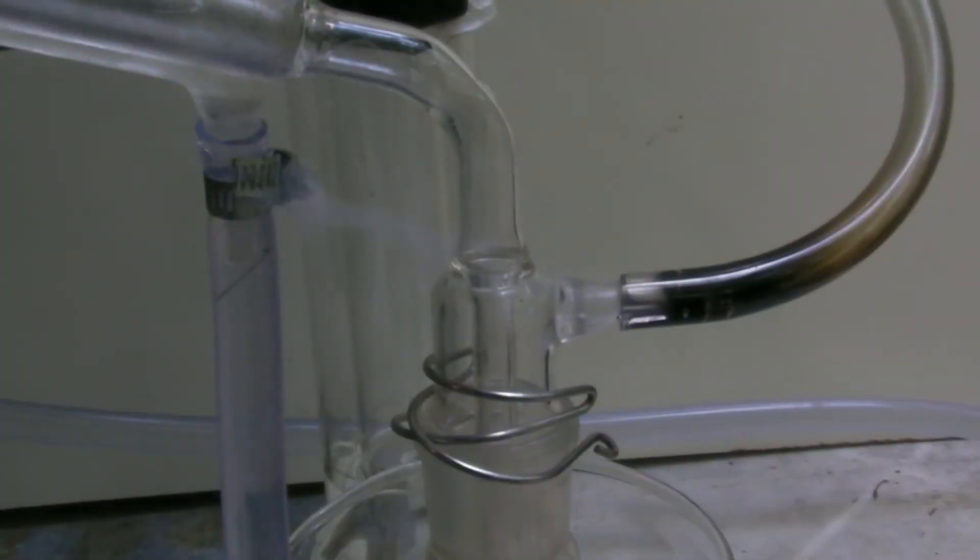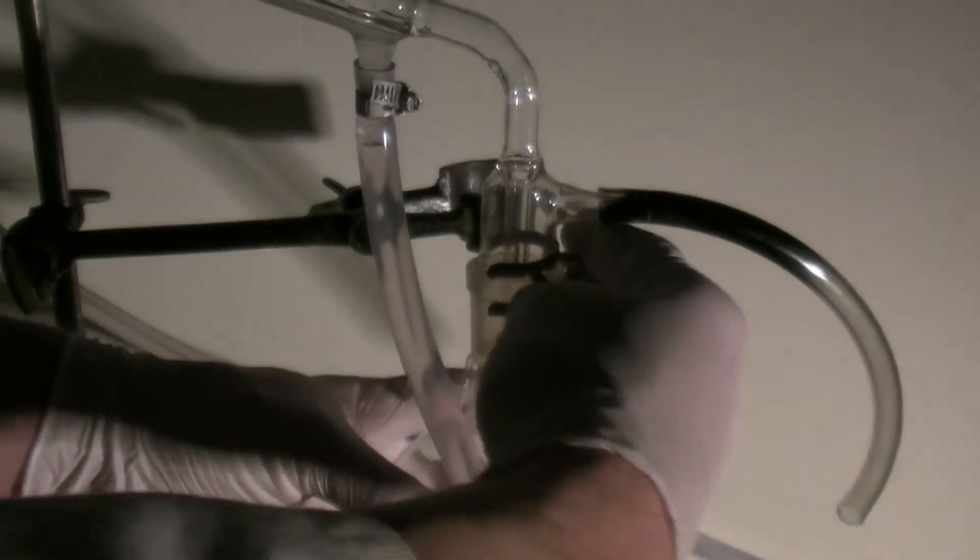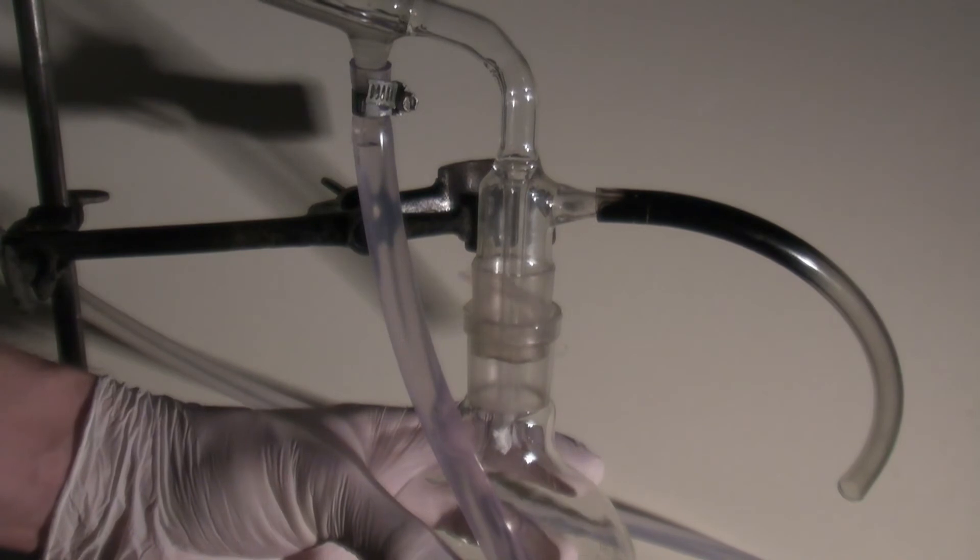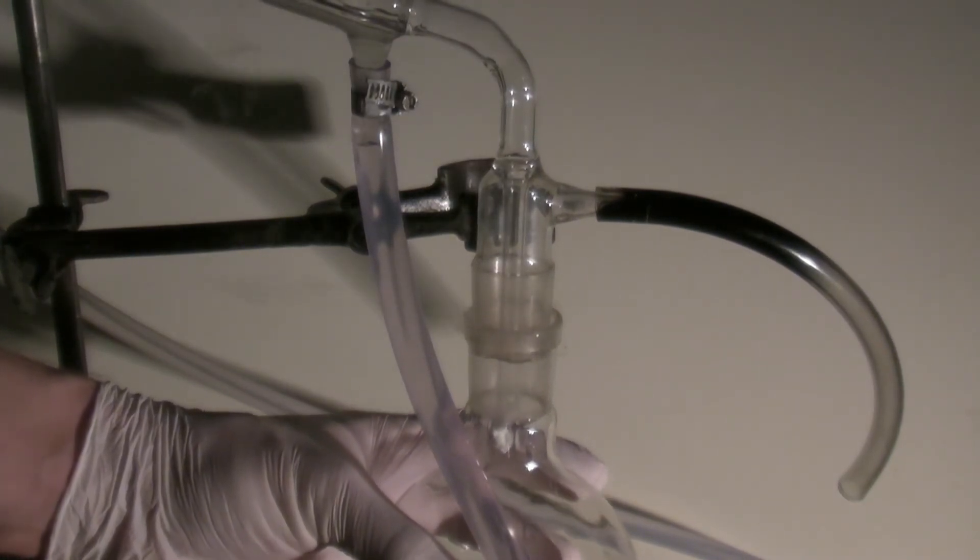The bad yield might be mainly due to the phosphorus pentoxide being several years old. The loss due to the leaking could only be a few percent because otherwise the amount of vapors would have been way higher. When taking apart the apparatus all traces of sulfur trioxide have to be dissolved in sulfuric acid before it can be flushed with water.